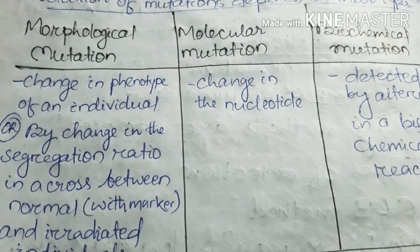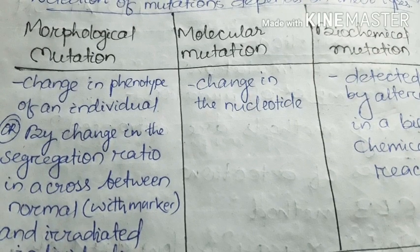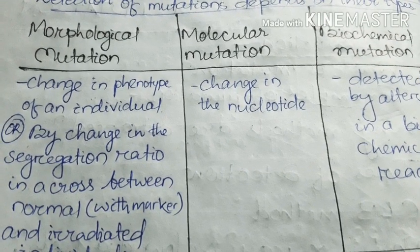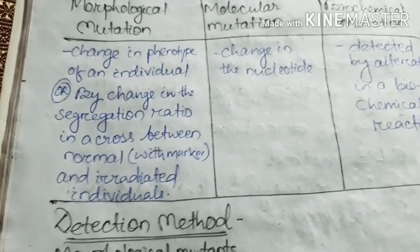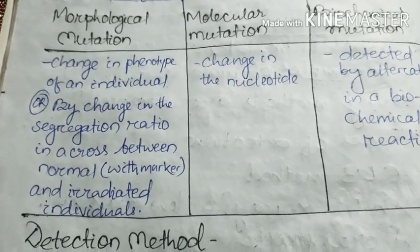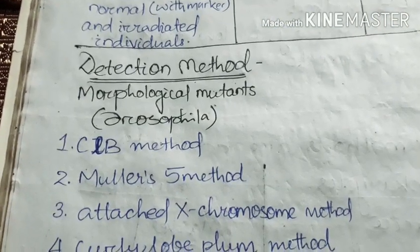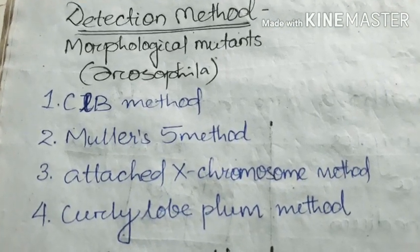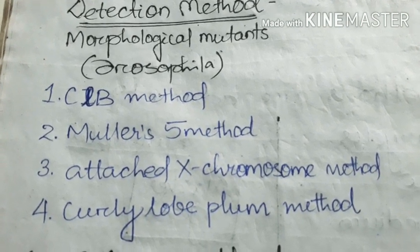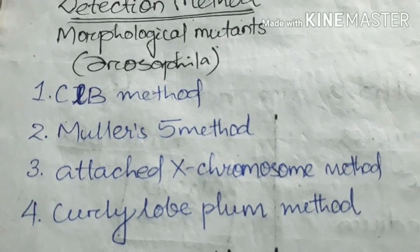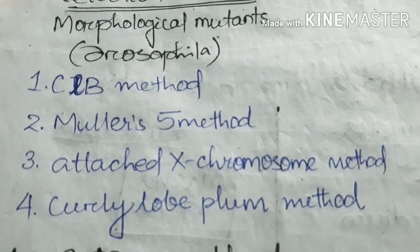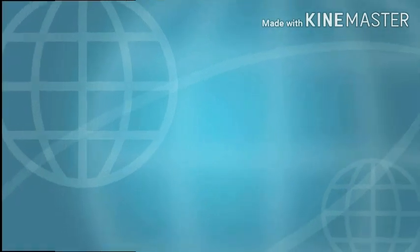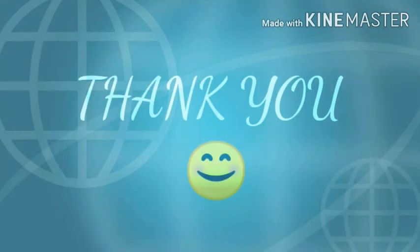Our main focus is the CLB method, which falls under morphological mutation. You will better understand why later. These detection methods are experimented in Drosophila. There are four types of methods: the CLB method, Muller's five method, the attached X-chromosome method, and the curly lobe bomb method. Clear your doubts in the comment section below, and if you found this lecture helpful, please like, share, and subscribe.